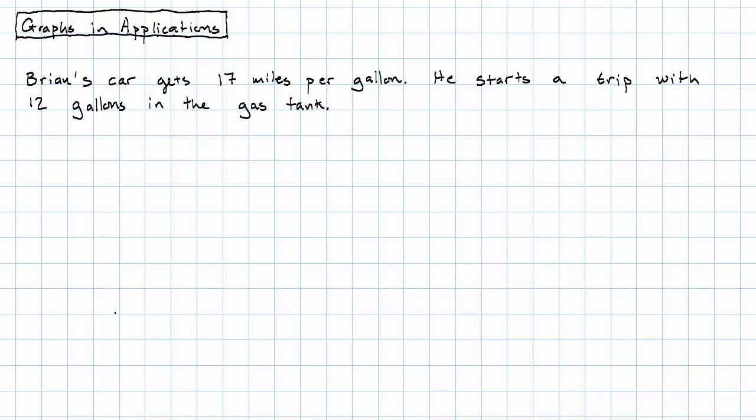So suppose that Brian's car gets 17 miles per gallon and he starts a trip with 12 gallons in the gas tank. Our independent variable will be D, the distance Brian drove. Our dependent variable will be G, the amount of gas in Brian's car.